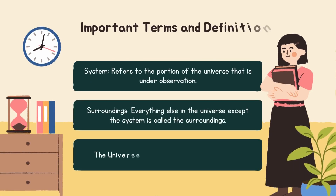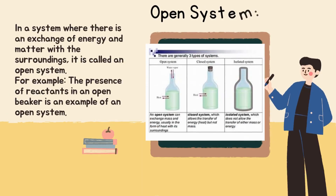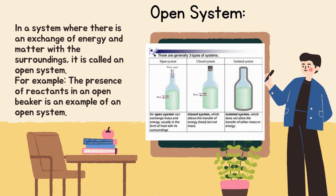Starting with important terms and definitions. First is system, which refers to the portion of the universe that is under observation. Second is surroundings — everything else in the universe except the system is called the surroundings, where the universe equals the system plus the surroundings. Open system: a system where there is an exchange of energy and matter with the surroundings is called an open system. For example, the presence of reactants in an open beaker.